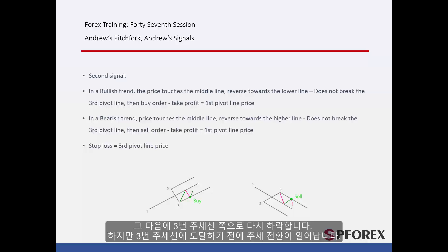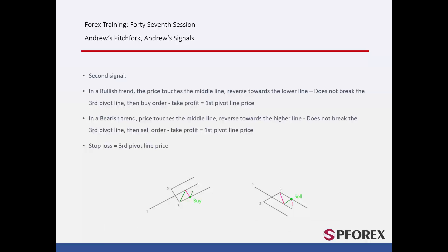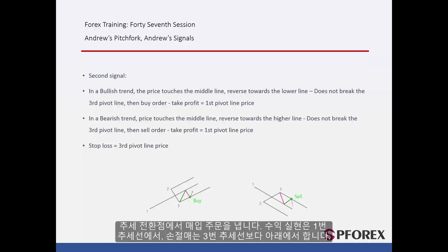But just before touching this line, it will change its direction. A sell order can be placed on this reversal point with TP equal to the first pivot price. SL can be lower than the third pivot line.